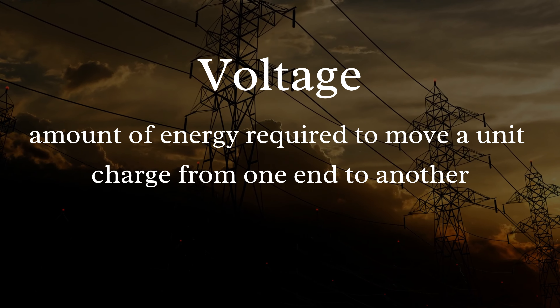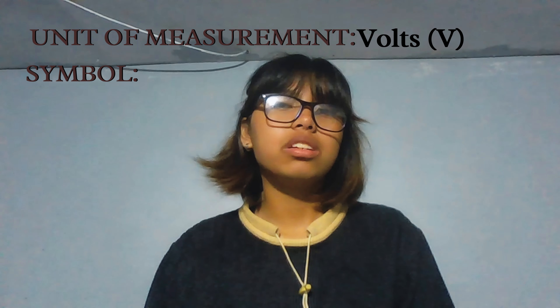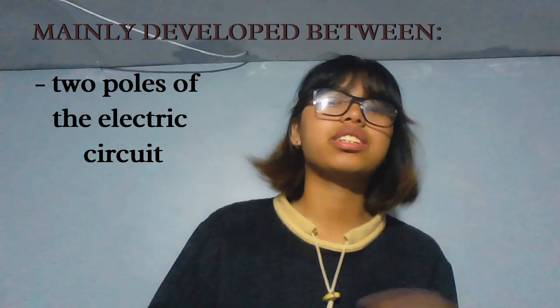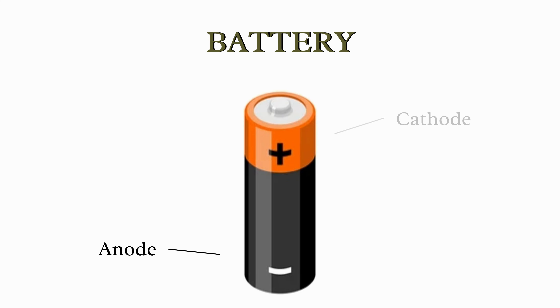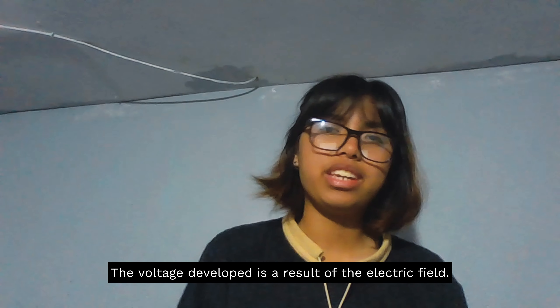Voltage is defined as the amount of energy required to move a unit charge from one end to another. Voltage is measured in volts and is denoted by the symbol V. Voltage is mainly developed between the two poles of the electric circuit — between the anode and the cathode of the battery. The positive terminal is known as the cathode, and the negative terminal is known as the anode. The potential at the cathode will be higher than the potential at the anode.